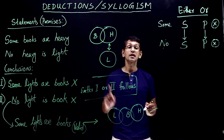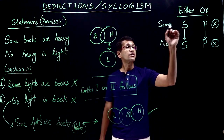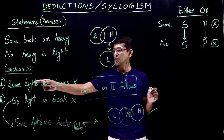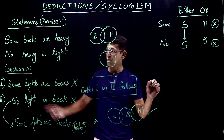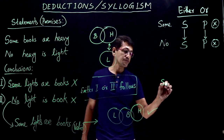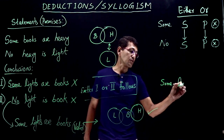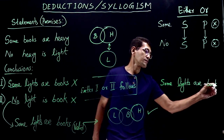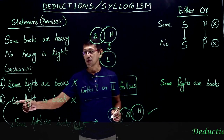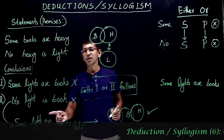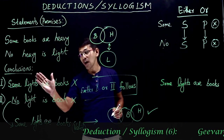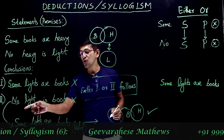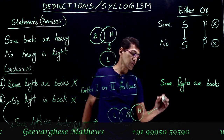How about the other case? If subject is predicate and predicate is subject, we'll take a similar example. The first conclusion: 'Some lights are books.' And instead of 'No light is book,' I'll have another conclusion: 'No books are light.'